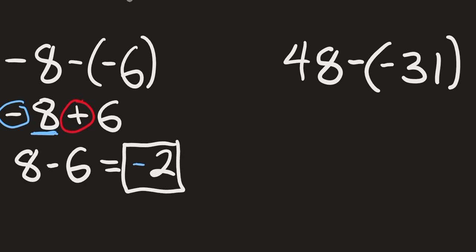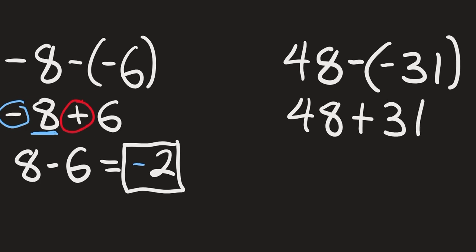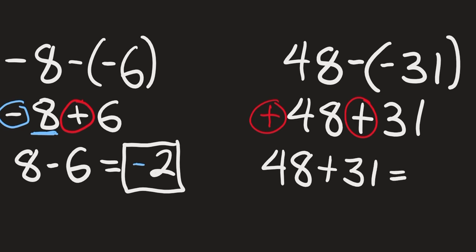For the second question, we have 48 minus negative 31. The two negatives turn into a positive, so we will have 48 plus 31. Both 48 and 31 are positive, so they have the same sign, meaning we add the two numbers together — 48 plus 31 is 79 — and since they have the same sign, our answer is positive 79.